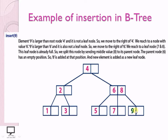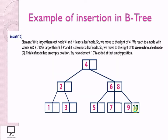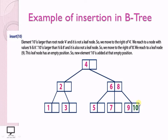For value 10: space is available and we can easily insert it into the B-Tree as a leaf node, following all B-Tree properties. I hope all of you understand how to insert a node into a B-Tree.